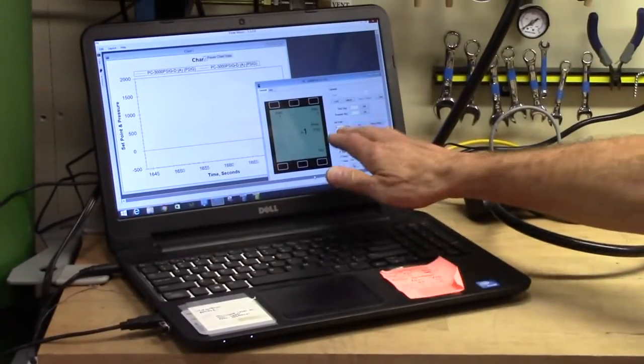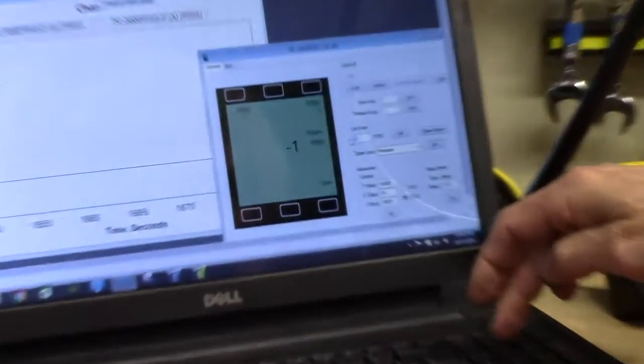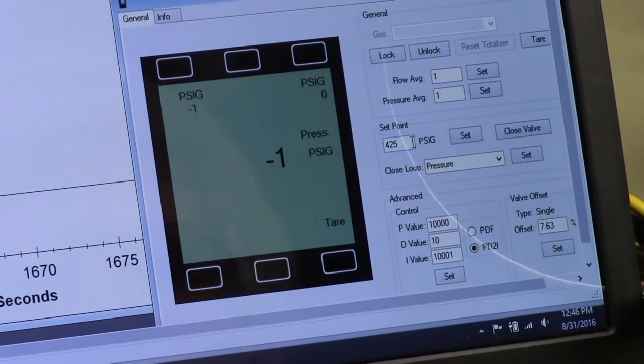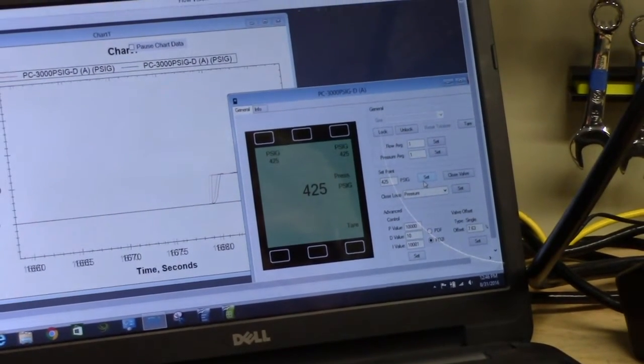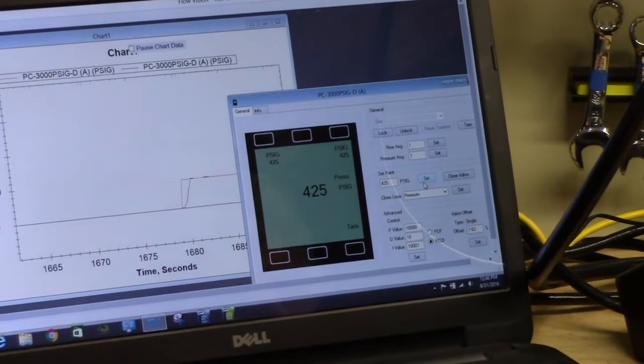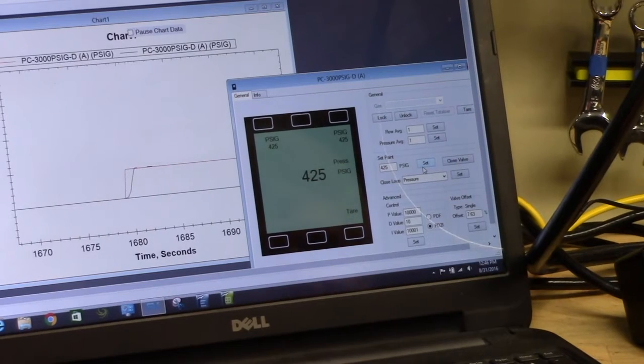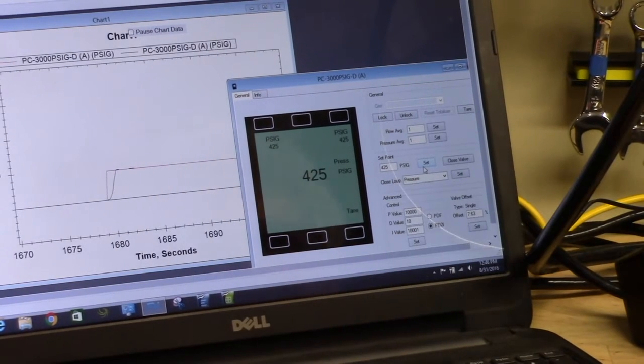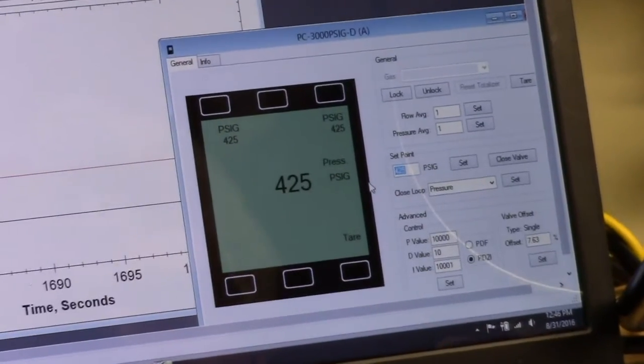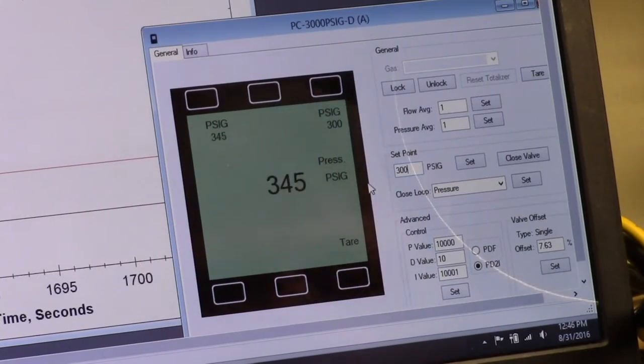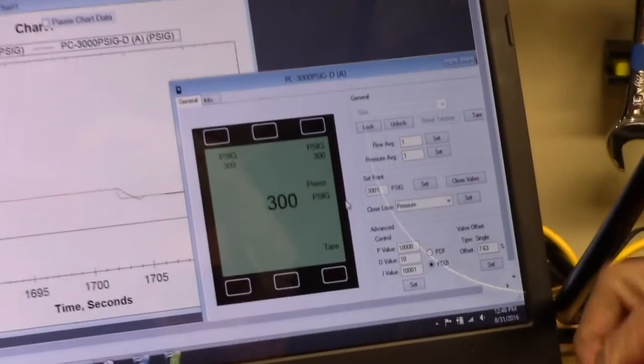To change the set point simply go to the set point field here and enter the value you wish with 425 pounds per square inch and set. And as before the set point and the actual pressure are indicated here. We are showing the output here on our pressure gauge and as well as on the software. To change that pressure you just change the value in the field here. We'll go to 300. In fact any value you want. We can go to 156 if we wish.